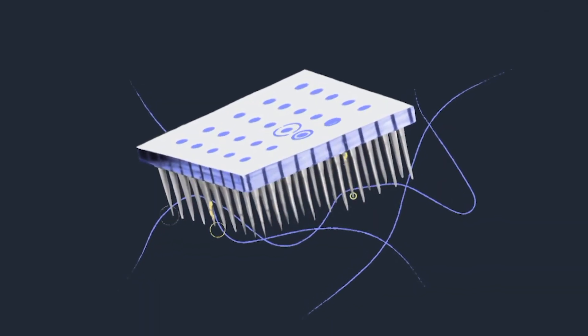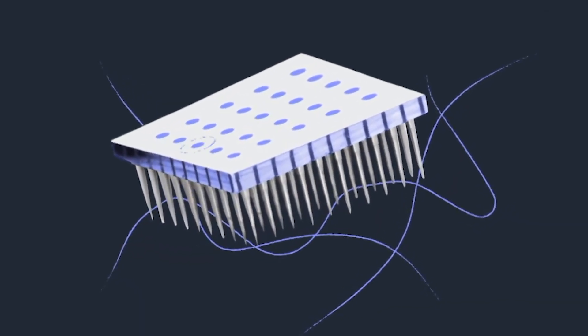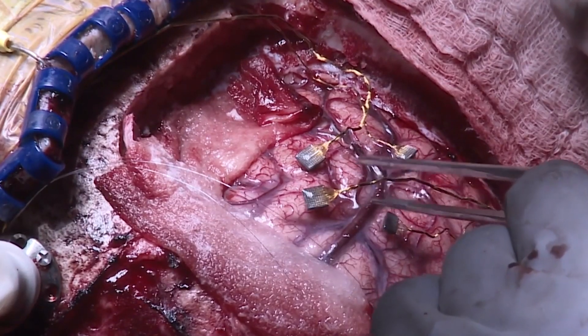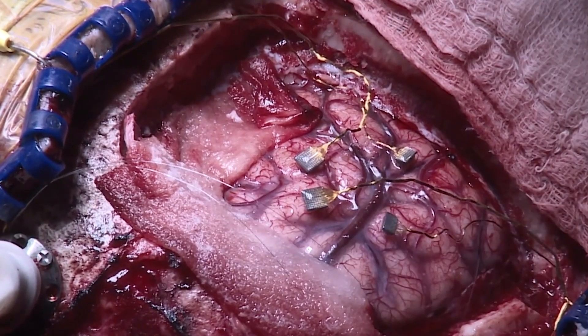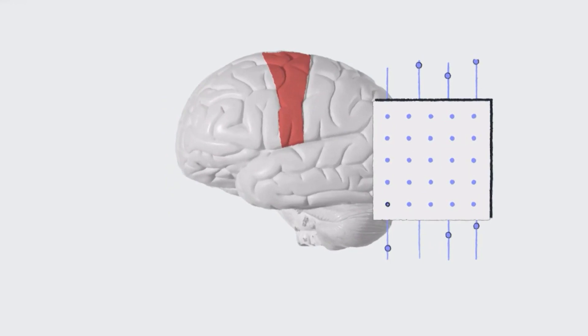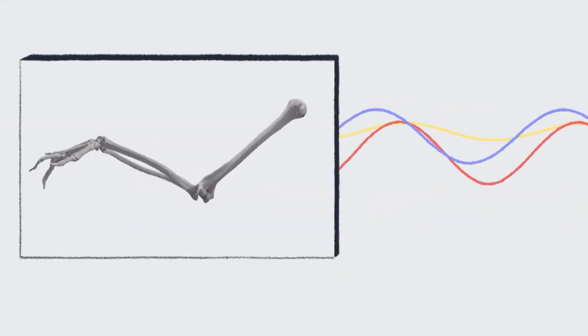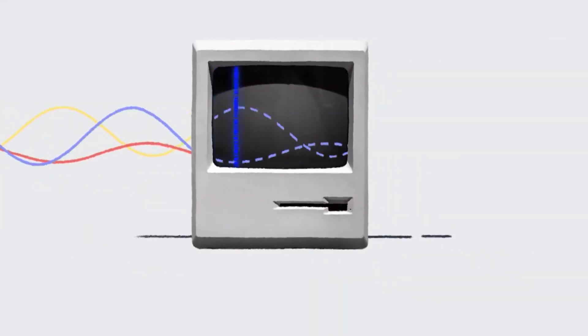The link between neurons and computers: these electrodes, often thinner than a human hair, detect and record electrical signals produced by neurons. These signals are then transmitted to an external device, effectively creating a communication pathway between the brain and a computer.